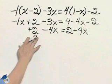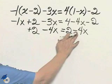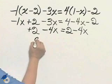Why, just look at that. 2 minus 4x equals 2 minus 4x. This is always true.